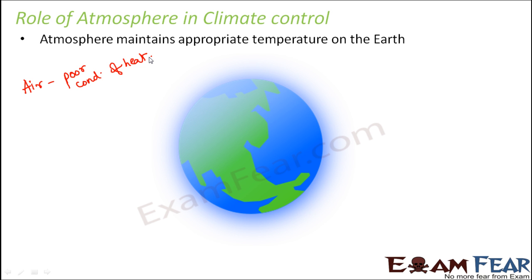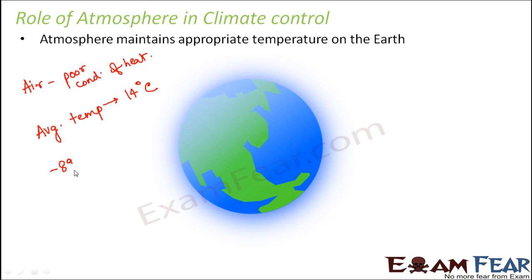This means the atmosphere maintains a decent average temperature on the earth. The average temperature on the earth is somewhere around 14 degrees Celsius, which is quite decent for the survival of life forms. Even at extremes, the temperature ranges from minus 89 degrees Celsius to plus 57.7 degrees Celsius.